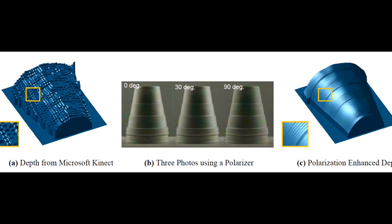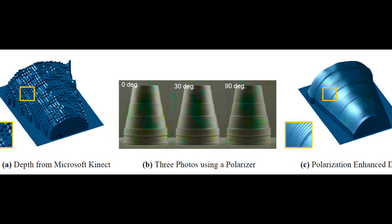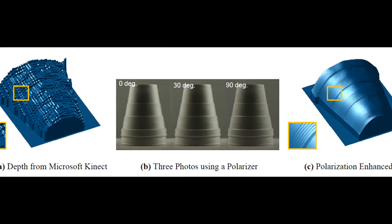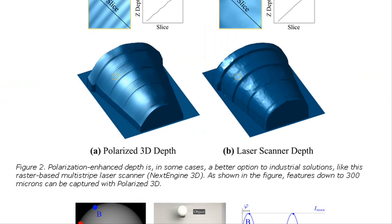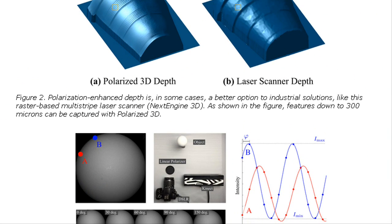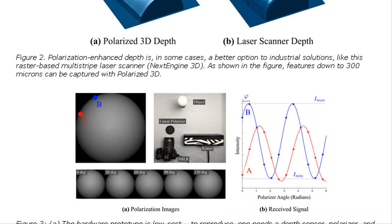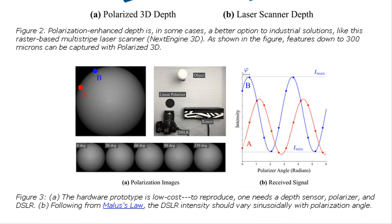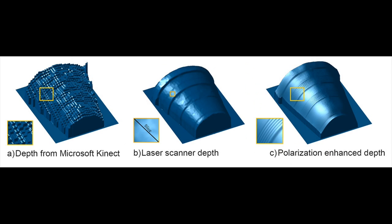In each experiment, the researchers took three photos of an object, rotating the polarizing filter each time, and their algorithms compared the light intensities of the resulting images. On its own, at a distance of several meters, the Kinect can resolve physical features as small as a centimeter or so across.